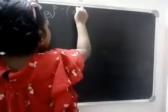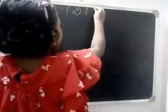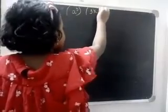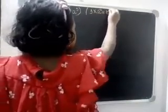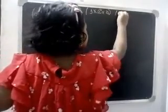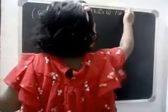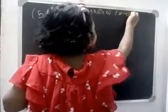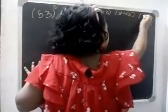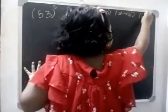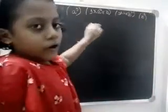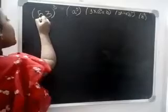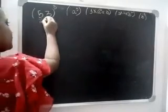The four steps are: A cube, 3 into A squared into B, 3 into A into B squared, and B cube. We have to follow these four steps, then it will be easier to solve. Here, 5 is A and 3 is B.